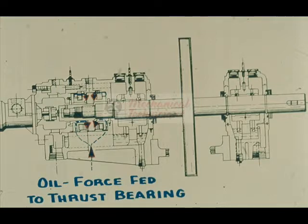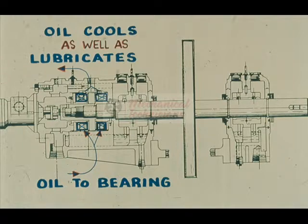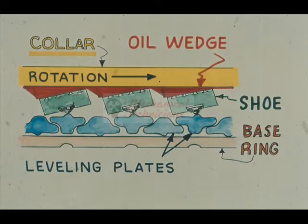Lubricating oil as specified by the manufacturer is force-fed into the thrust bearing housing and is directed through passageways behind the thrust bearing base ring and inward along the shaft to the thrust collar. A portion of the oil flows through the base ring, lubricating and cooling these components. A very important part of the oil supply, caused by the relative motion of the collar and the bearing shoes, is wedged in between the bearing shoes and the rotating collar. Hence, in operation there is no metal-to-metal contact of the shoe to the collar.